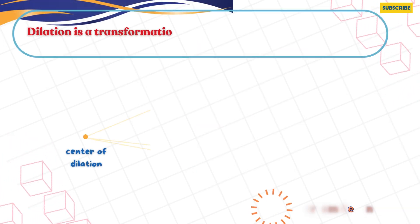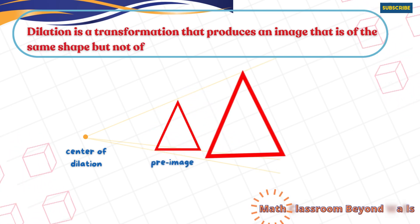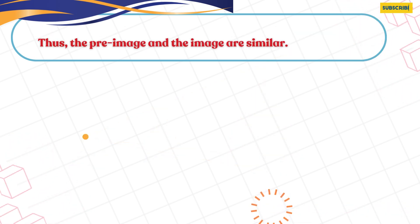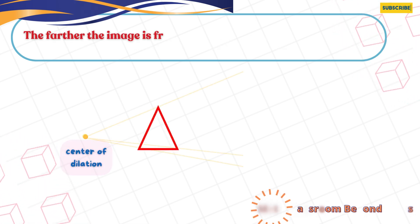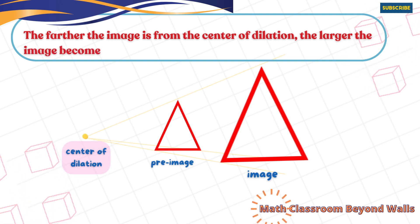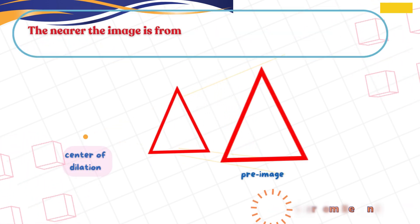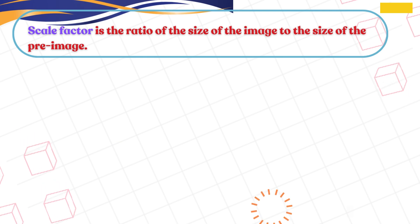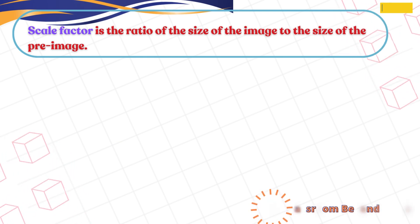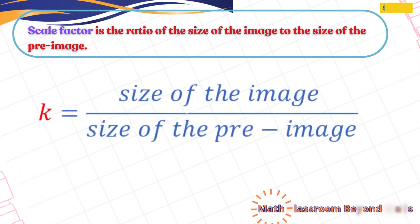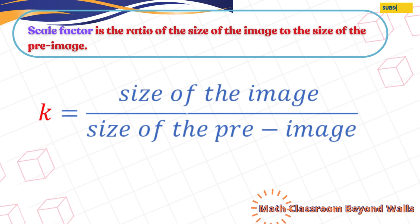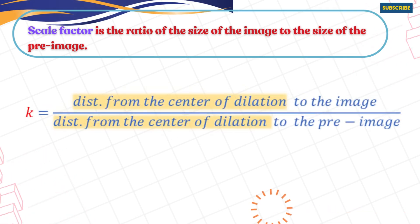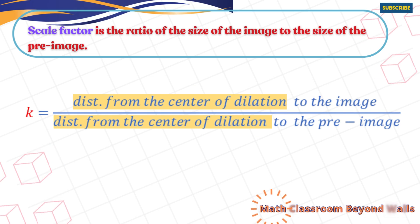Recall that a dilation is a kind of transformation that produces an image that is of the same shape but not of the same size as the pre-image; thus the pre-image and the image are similar. Also, during dilation, the further the image is from the center of dilation, the larger it is. The nearer the image is to the center of dilation, the smaller it is. The ratio of the size of the image to the size of the pre-image is the scale factor k. That is, k equals size of the image over the size of the pre-image. The word 'size' in the formula could also mean side length, or the distance from the center of dilation to the image or pre-image.